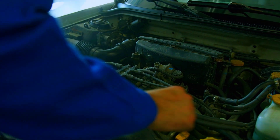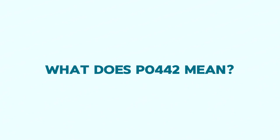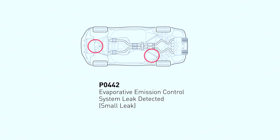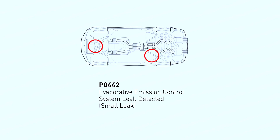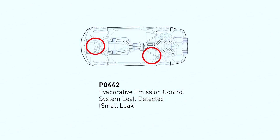Fumes are bad for the environment, so let's plug that leak. Engine code PO442 means a small leakage in the evaporative emission control system. It is not a critical problem, but it could be annoying and cause something more serious. We recommend addressing it as soon as possible to avoid further problems.